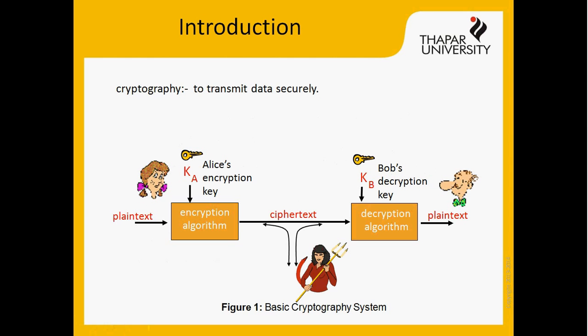This diagram shows that plaintext is encrypted using the encryption key and converted into ciphertext. This ciphertext is transmitted through the insecure network, and at the receiver end, the ciphertext is again converted back into plaintext using the decryption algorithm.